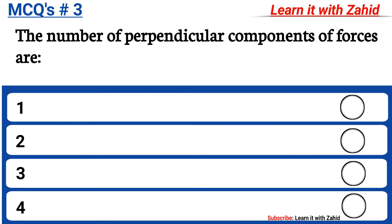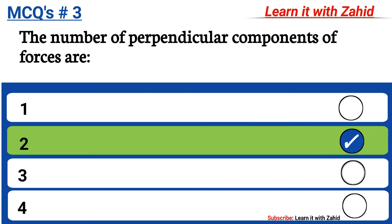The number of perpendicular components of forces are: option A one, option B two, option C three, option D four. The correct answer is option B, two.